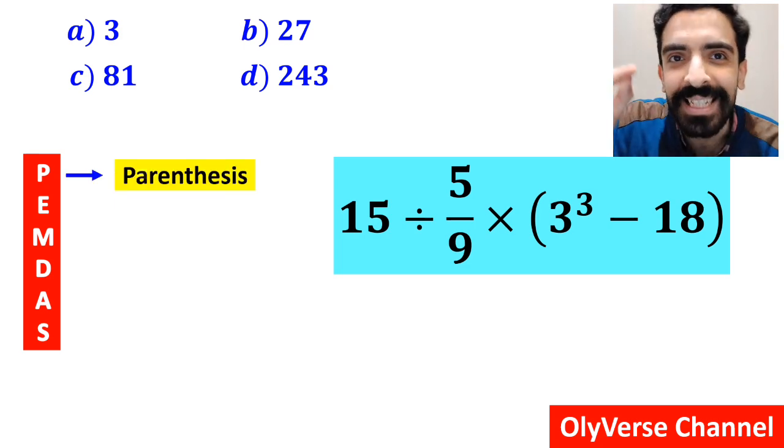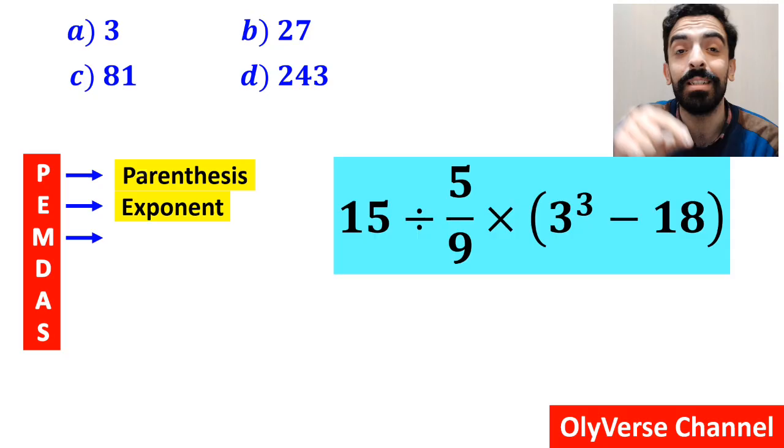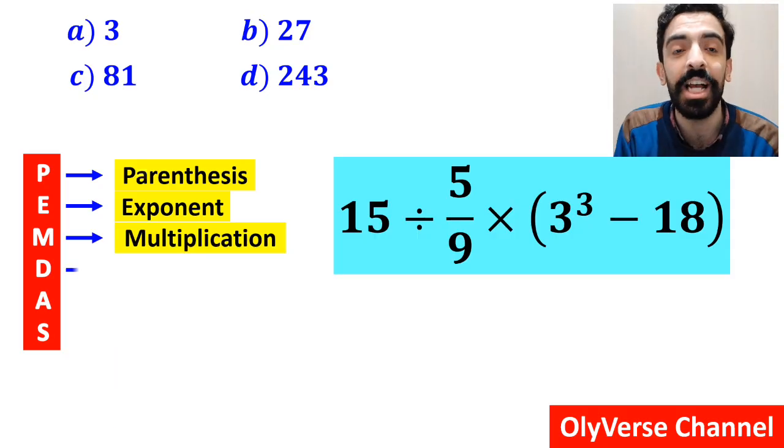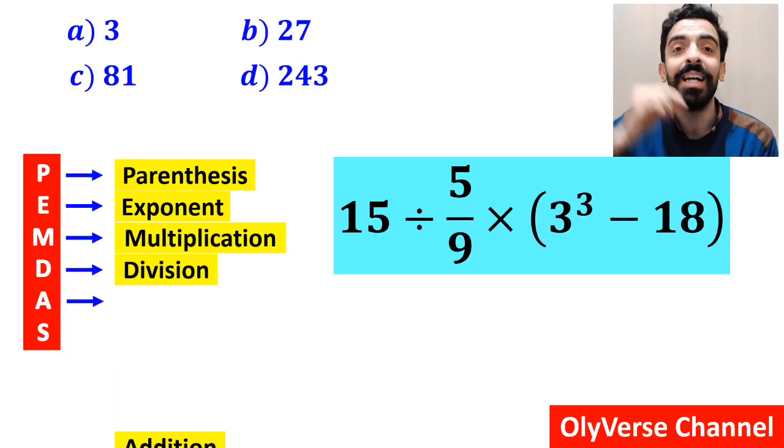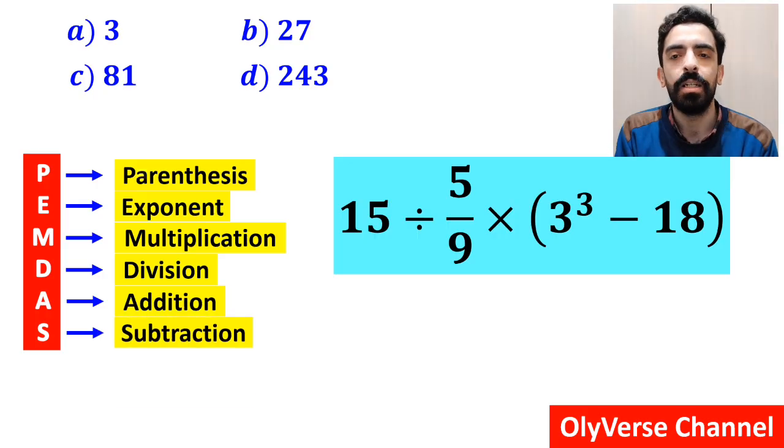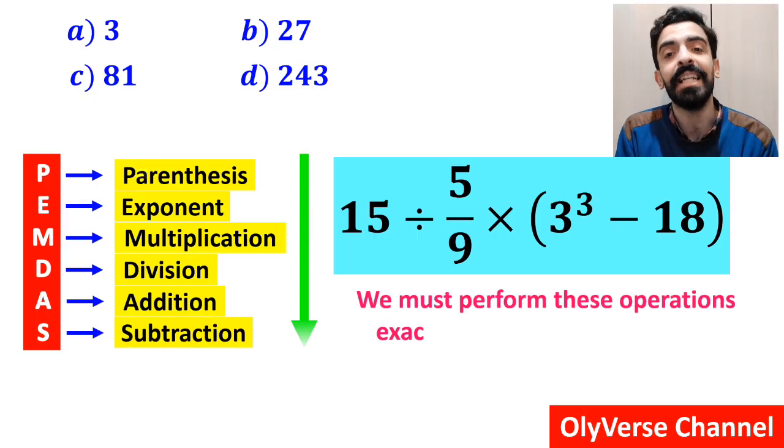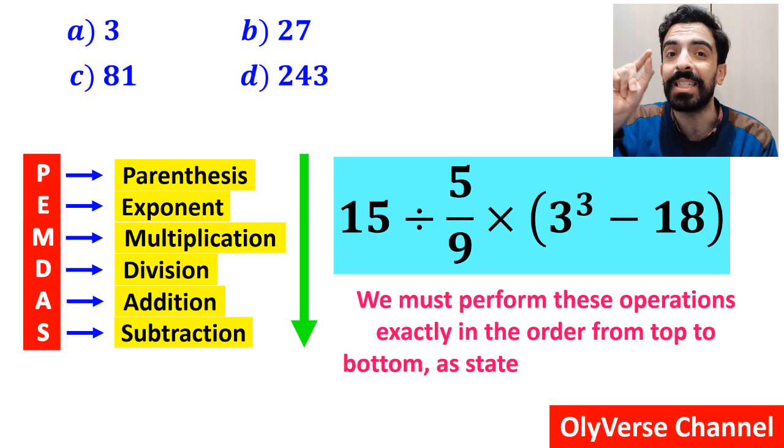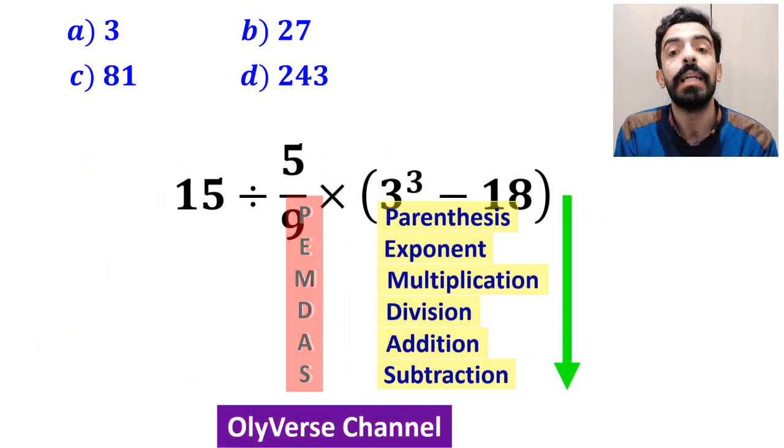In this rule, P stands for parenthesis, E stands for exponent, M stands for multiplication, D stands for division, A stands for addition, and S stands for subtraction. We must perform these operations exactly in order from top to bottom as stated in the PEMDAS rule.